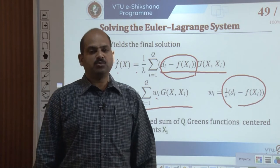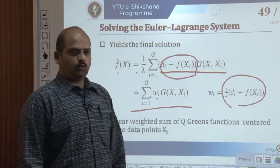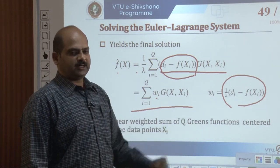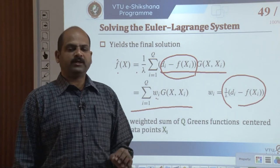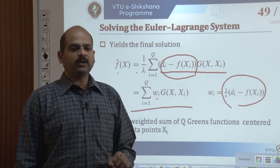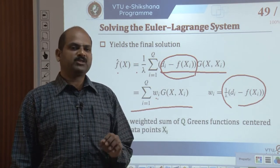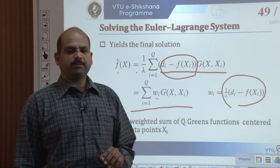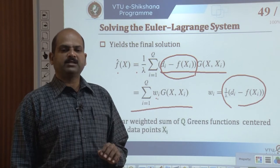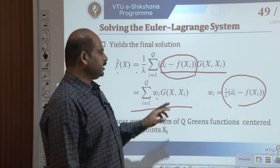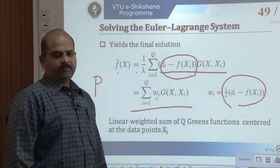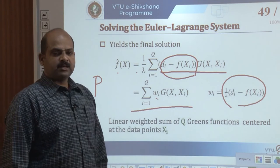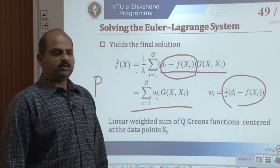What does this equation mean? The solution is a linear weighted sum of q Green's functions, meaning they form a basis of functions in the space which is therefore q-dimensional, in which the solution of the regularization problem lies. To sum up, the regularization solution uses q Green's functions in a weighted summation, where the nature of the chosen Green's function depends upon the differential operator p chosen for the regularization term R.